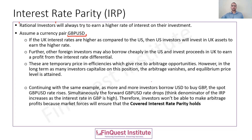Continuing with the same example — as more and more people are borrowing US dollars in order to purchase pounds, because everyone wants to earn that higher interest rate being offered in the UK, the demand for British pounds is going to rise naturally. So the spot GBP/USD rate is naturally going to increase because demand is rising. Simultaneously, the forward GBP/USD rate is going to drop, because the interest rates in British pounds are very high — from an Interest Rate Parity equation perspective, we are dividing by a larger quantum, which impacts the forward rate. Because of this phenomenon, investors won't be able to make an arbitrage profit, as market forces ensure that covered interest rate parity holds.